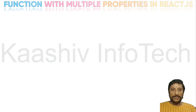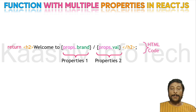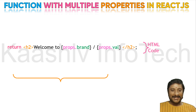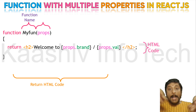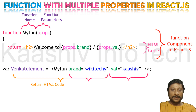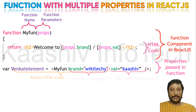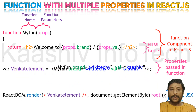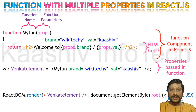Now let's move on to multiple properties. Here we have props.brand and props.value — two properties. I'm going to pass two parameters when calling this function. The function myFunction receives one props parameter which contains multiple values inside. I call myFun with brand equal to 'wikidiki' and value equal to 'Kashwin'. The output shows 'Welcome to Wikidiki and Kashwin Infotech' — that's how multiple properties work.